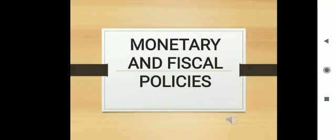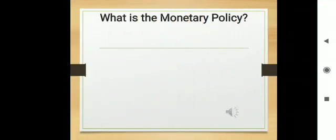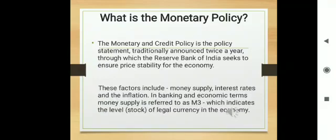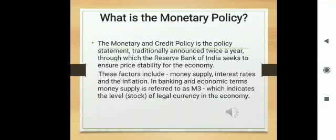Before moving to the quantitative and qualitative method, let us go through the monetary and fiscal policies. The monetary policy is the policy of RBI to ensure price stability for the economy. This includes money supply, interest rate, etc. We have already learnt what is M3. You have the detailed notes of M1, M2 and M3.